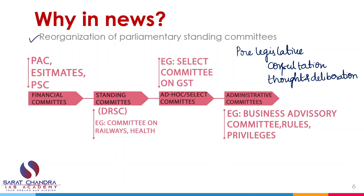There are examples of bills which had proper legislative thought. For example, consider the data protection bill — it is a best example. It was actually passed by taking all required deliberations. It was given to the Shri Krishna Committee, which went through the bill, made changes, and sent it to a joint parliamentary committee. The joint parliamentary committee gave almost 80 to 90 recommendations, and the government is now trying to make a new law with respect to data protection.